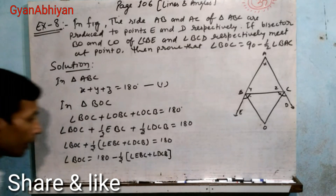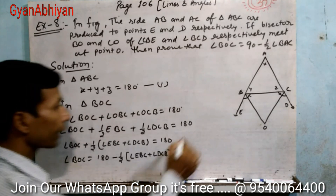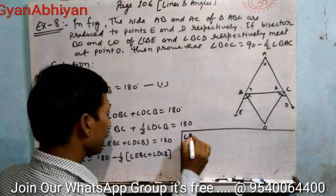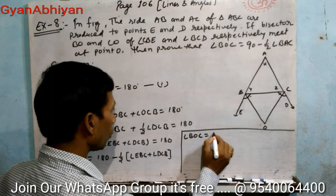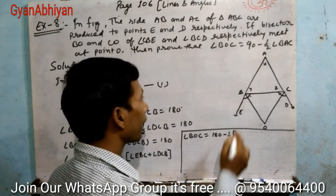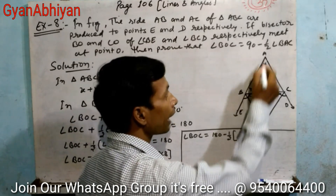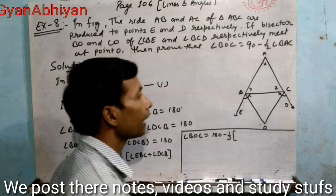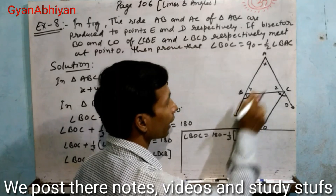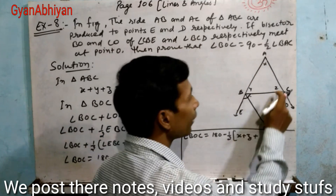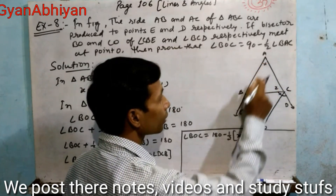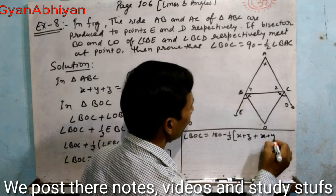अब angle EBC, triangle ABC का exterior angle है, इसलिए angle EBC equal to x plus z होगा। और angle DCB भी exterior angle है, तो angle DCB equal to x plus y होगा। यह exterior angle theorem से आता है।